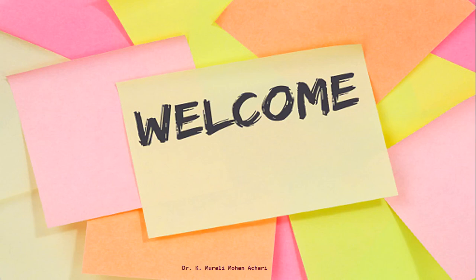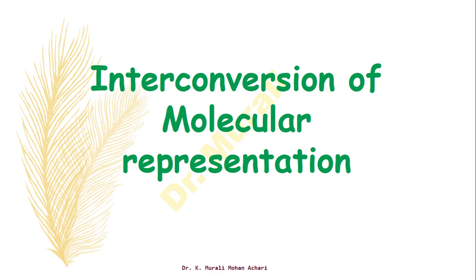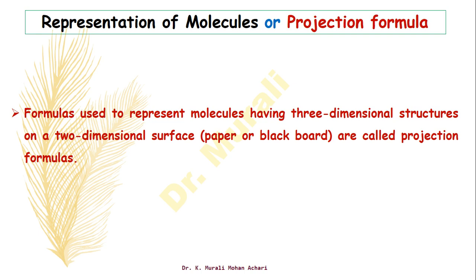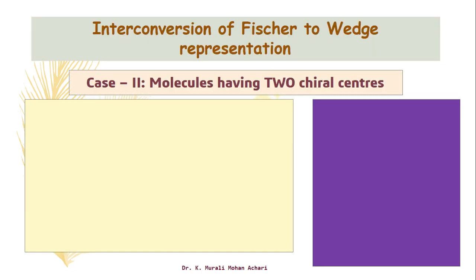Hello everyone, welcome back. In this video, we are going to learn the interconversion of molecular representations. Molecular representations are representations of molecules or projection formulas, which are used to represent molecules having three-dimensional structure on a two-dimensional surface. In the previous video, I discussed the interconversion of Fischer representation to wedge representation for molecules having one chiral centre. In this video, we are going to learn the same for molecules having two chiral centres.